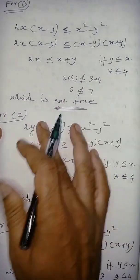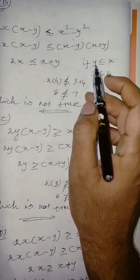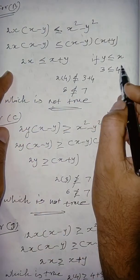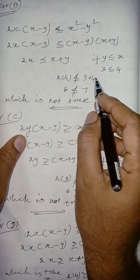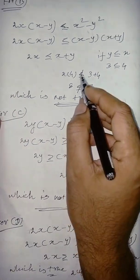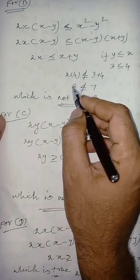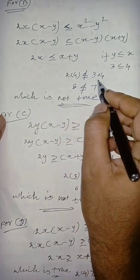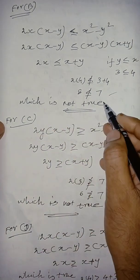By applying the same, I take the same one, 3 less than or equal to 4. Then, x is 4, so, 2 into 4, 8, x plus 4, that is 4 plus 3, 7. So, not satisfy this inequality. 8, which is not less than or equal to 7. So, well known. So, which is not true.